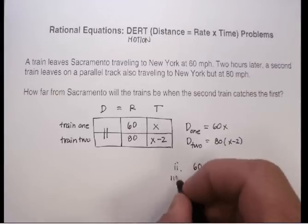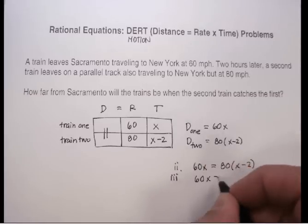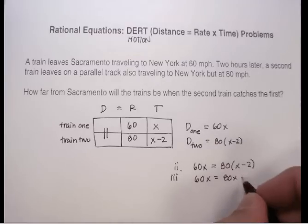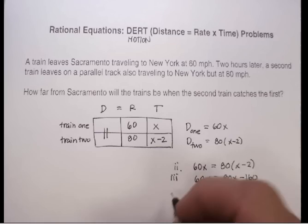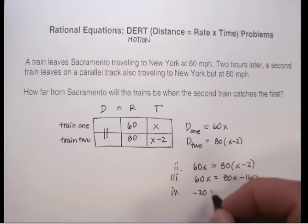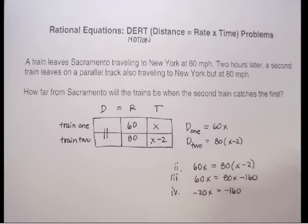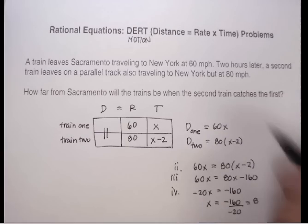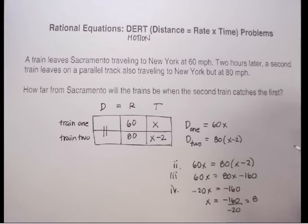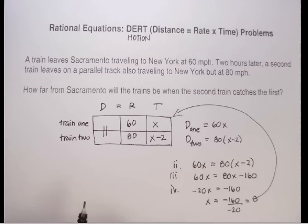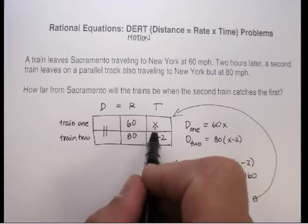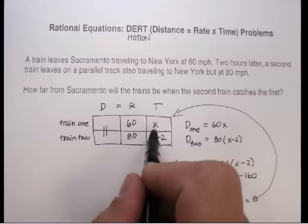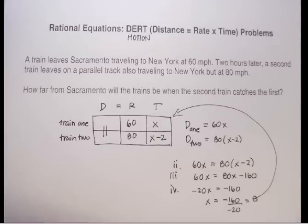Now let's solve that. 60X equals 80(X minus 2), which gives 60X equals 80X minus 160. Subtracting, we get negative 20X equals negative 160. Dividing by negative 20, X equals 8. Putting that back into our problem: it will take train one eight hours and train two six hours before the second train catches up. That's the final answer.